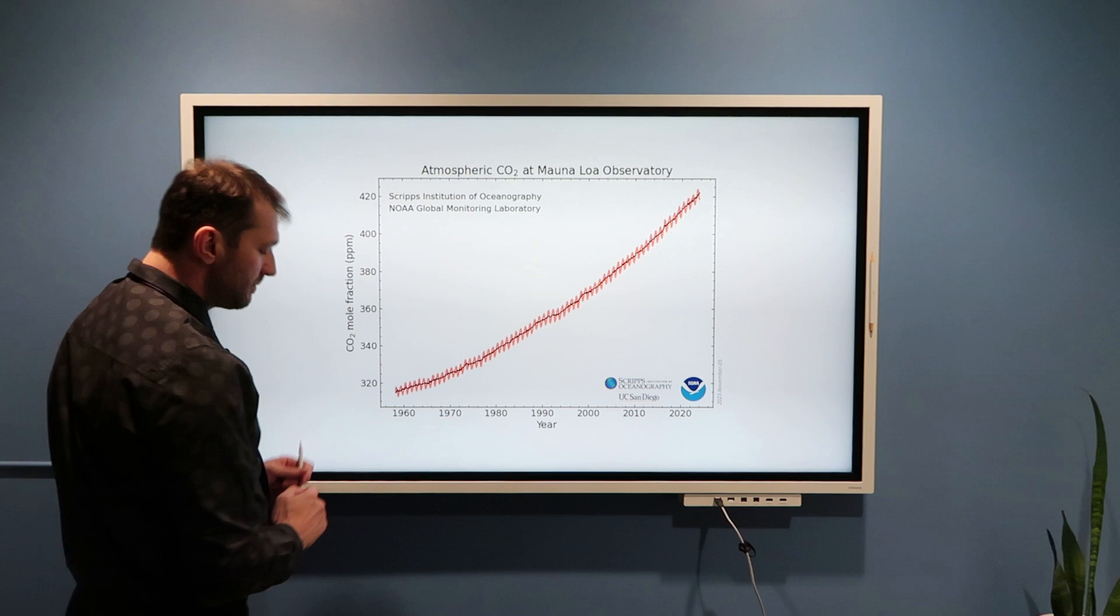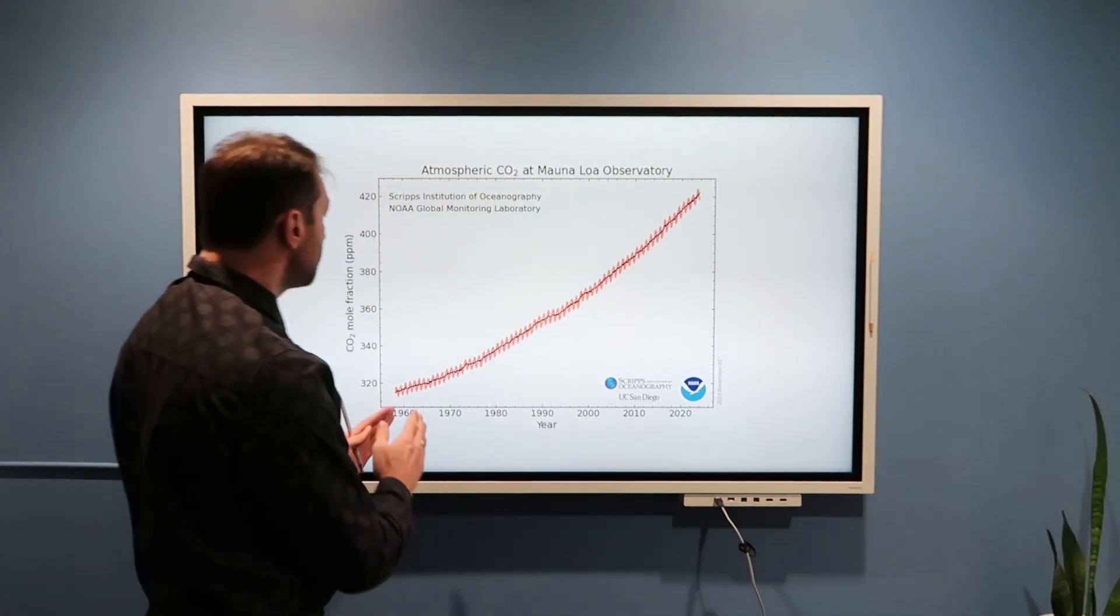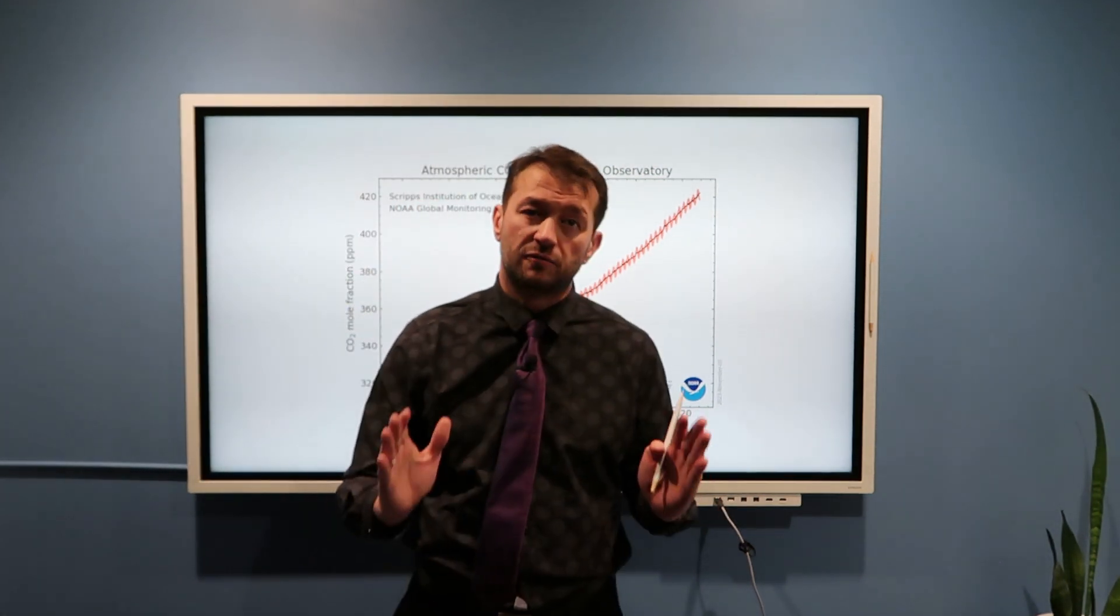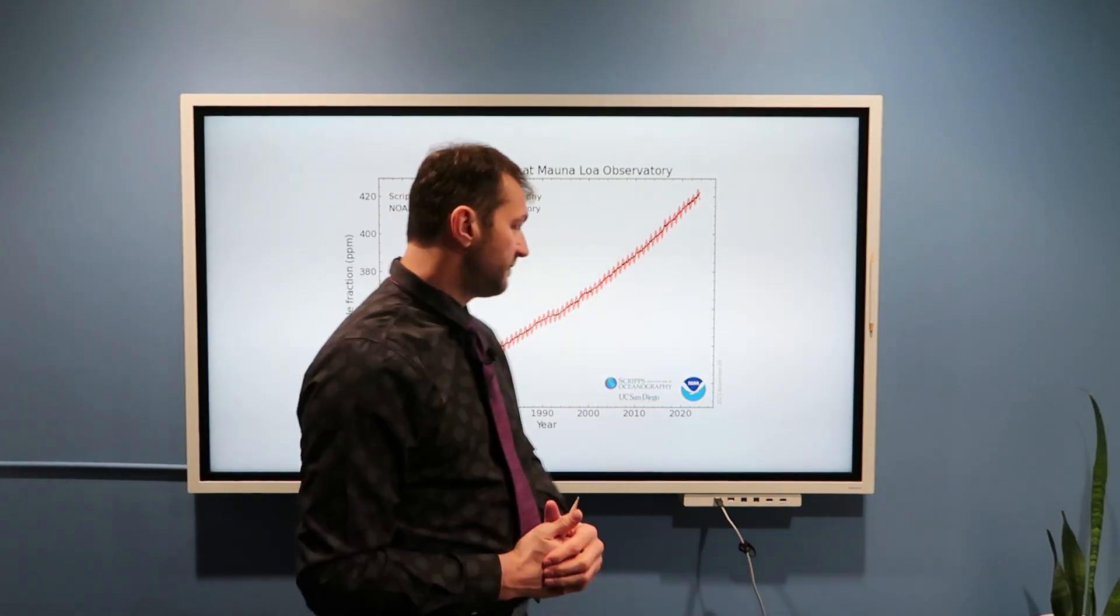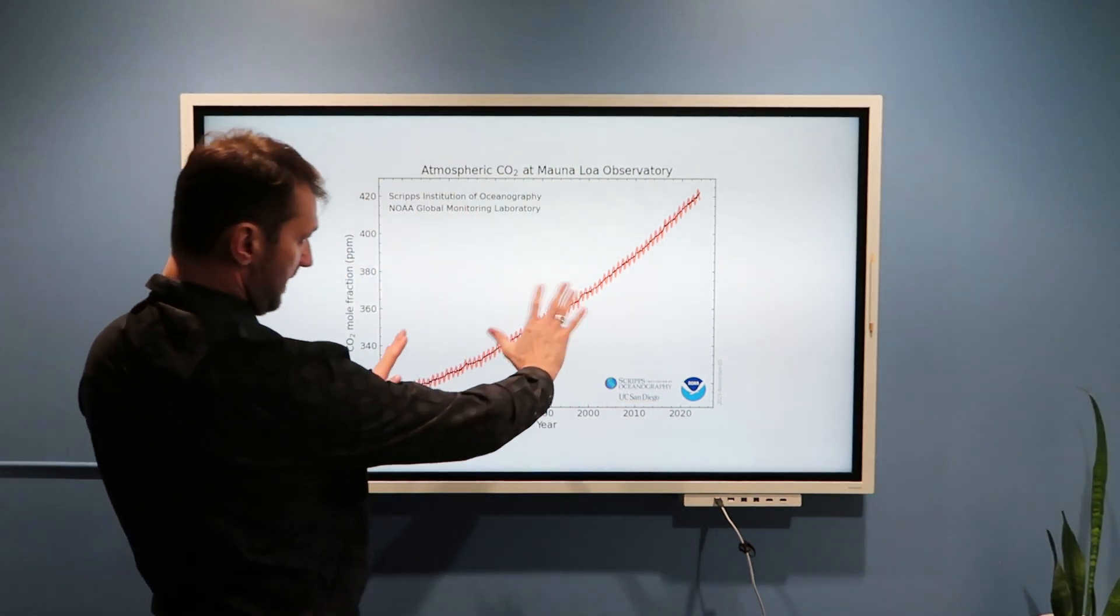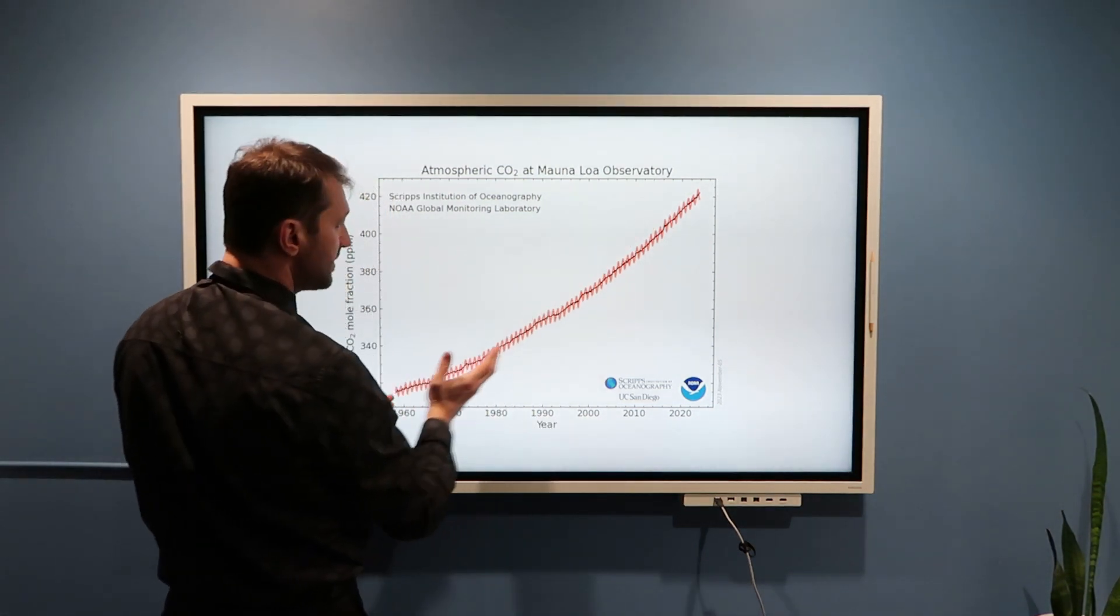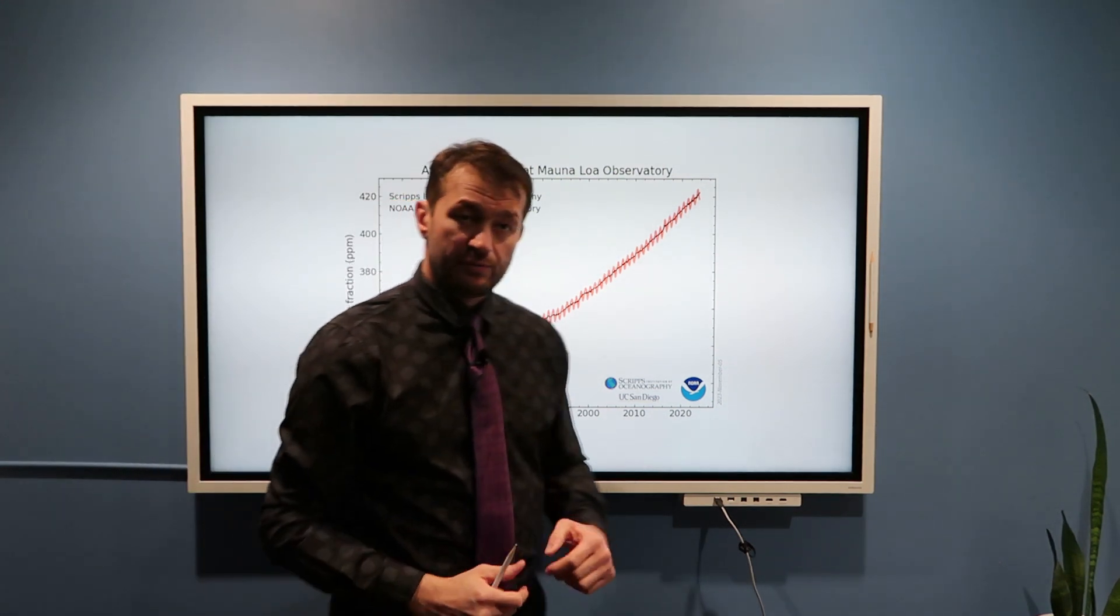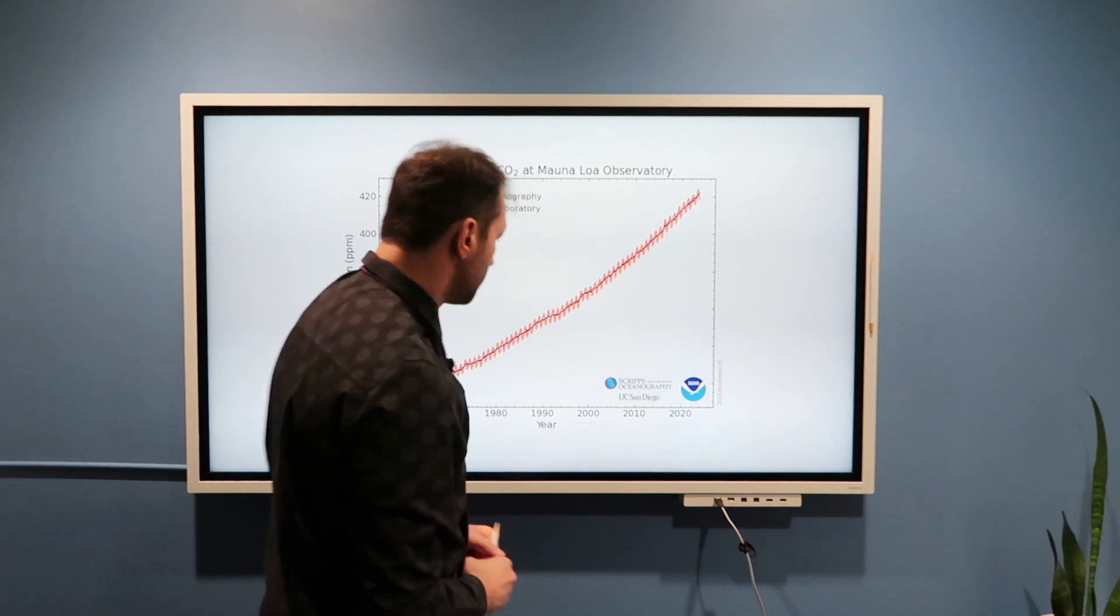Increase from approximately 320 parts per million that we had in 1960s to about 420, 418, 420 parts per million in 2023, when I'm recording this video. And if you look at this graph, you will, I hope, notice that this line, black line, is getting steeper and steeper, which means we are releasing more and more CO2 into the atmosphere.